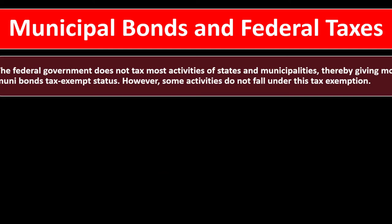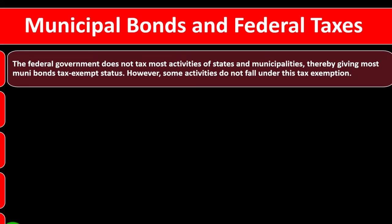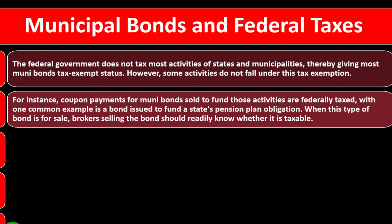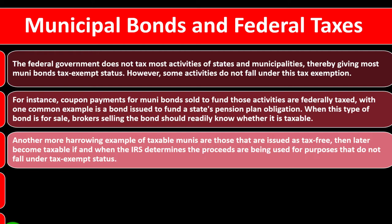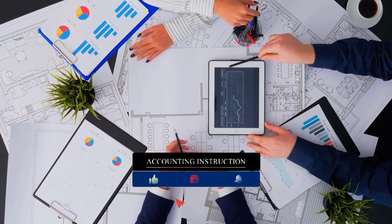The federal government does not tax most activities of states and municipalities, giving most muni bonds tax-exempt status. However, some activities do not fall under this exemption. Coupon payments for bonds sold to fund those activities are federally taxed — one common example is a bond issued to fund a state's pension plan obligations. When this type of bond is for sale, brokers selling the bond should readily know whether it is taxable.